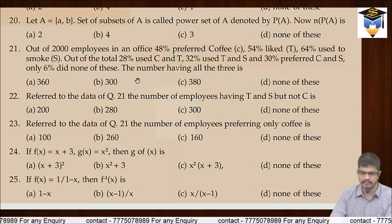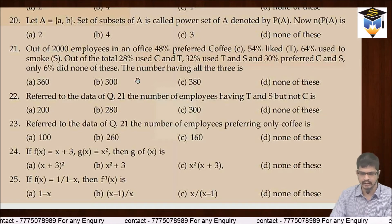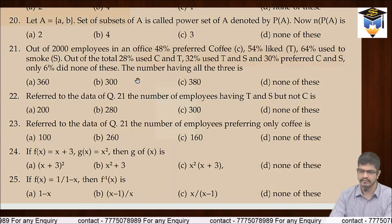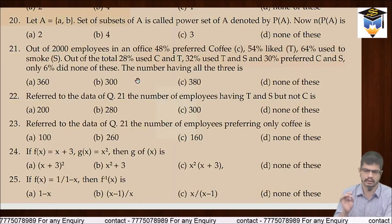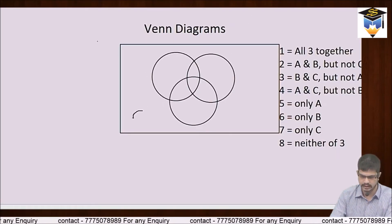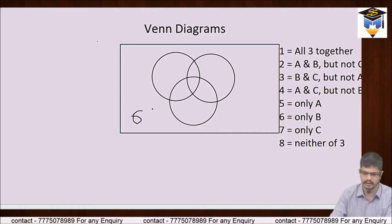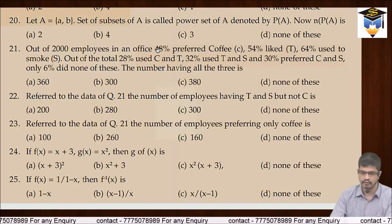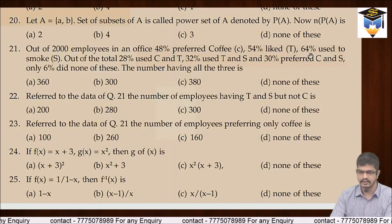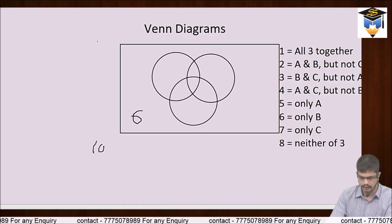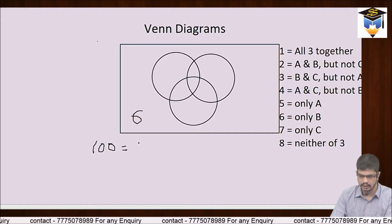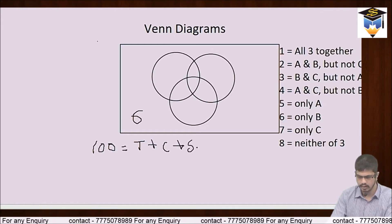Out of 2,000 employees in an office: 48% preferred coffee, 54% tea, and 64% smoke. Out of total, 28% used coffee and tea, 32% used tea and smoke, and 30% preferred coffee and smoke. Only 6% did none of these — na tea prefer karte hain, na coffee, na smoke. Toh yeh 6% sabse pehle clear wala area hai. Ab formula likhte hain: 100 = n(tea) + n(coffee) + n(smoke) − n(tea ∩ coffee) − n(tea ∩ smoke) − n(smoke ∩ coffee) + n(tea ∩ coffee ∩ smoke).